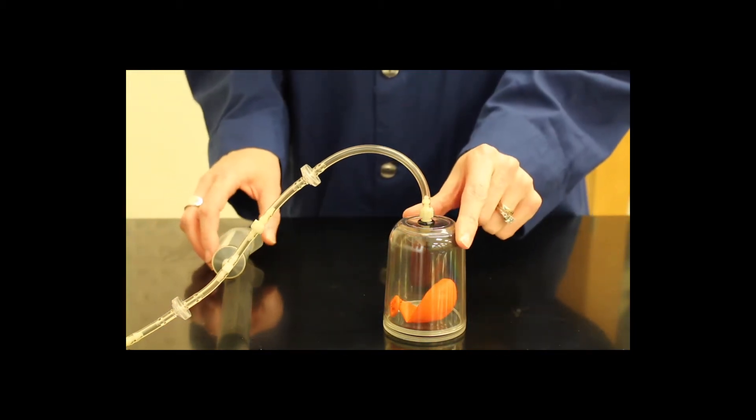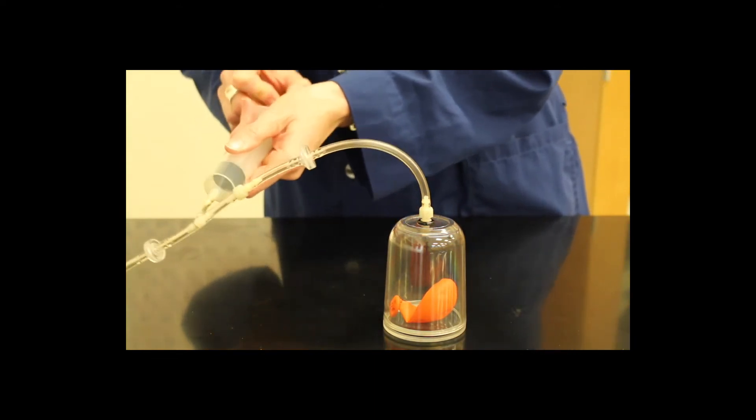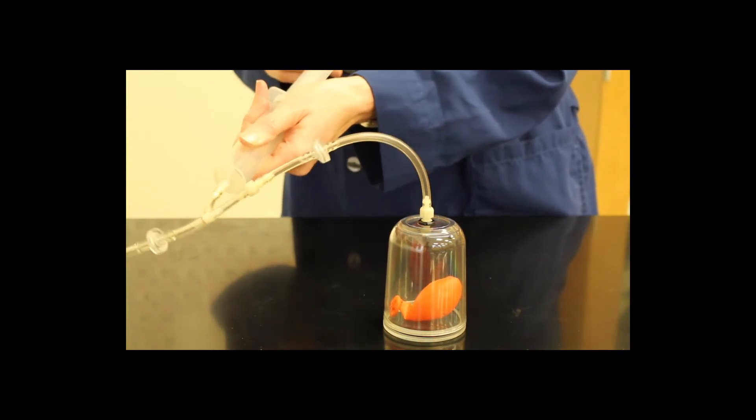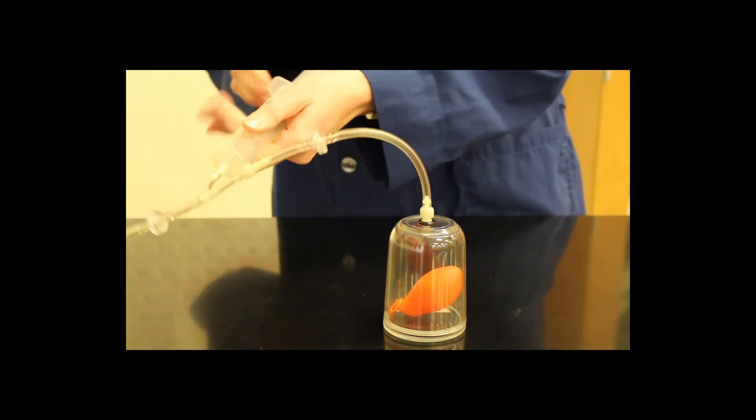So what we're going to do is we're going to take the bell jar and we're going to remove air from inside the bell jar. And as we do that, we are decreasing the pressure of the gases inside the bell jar.